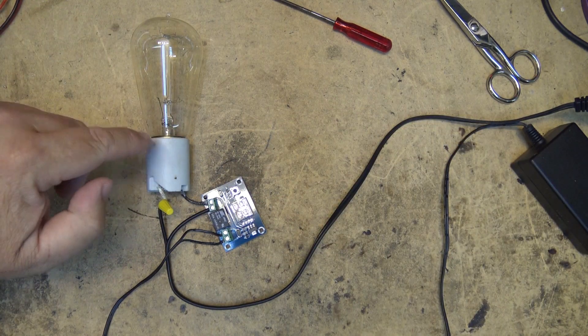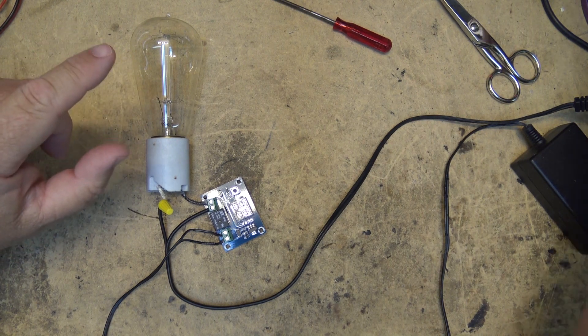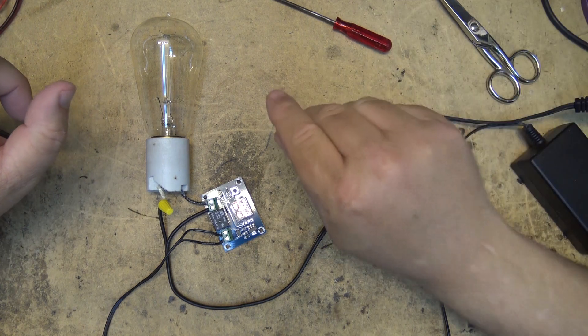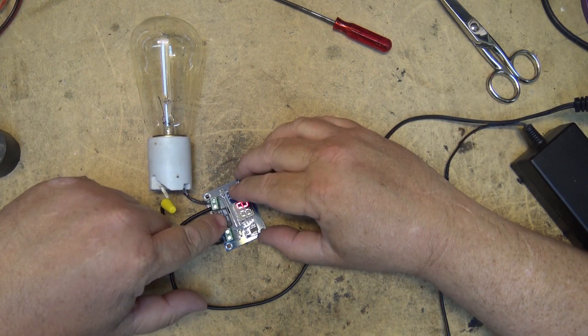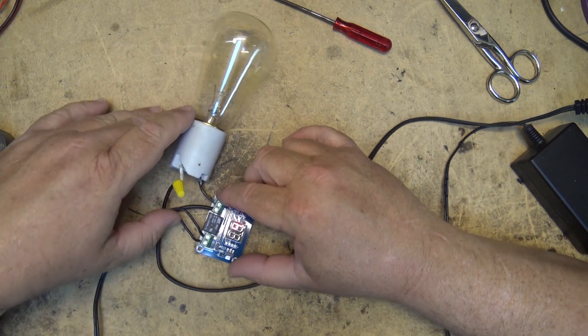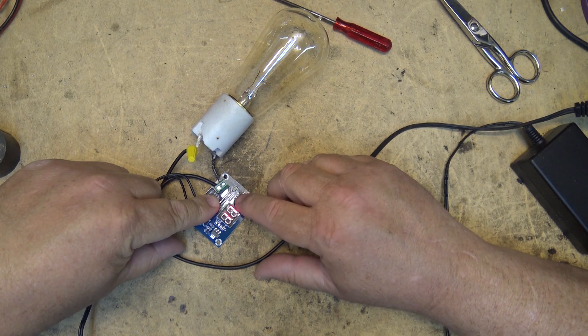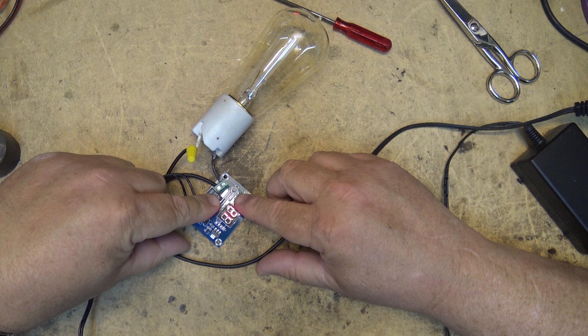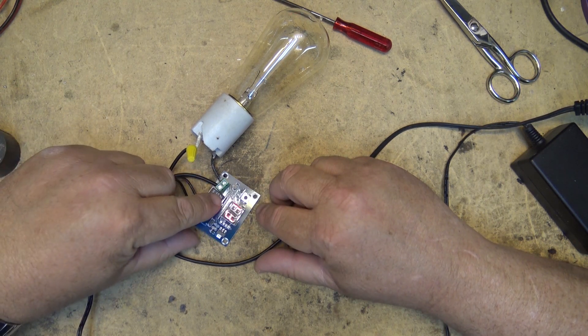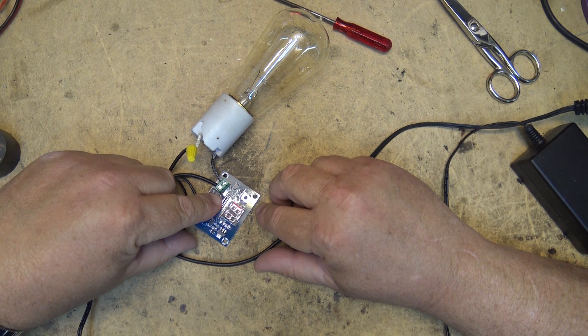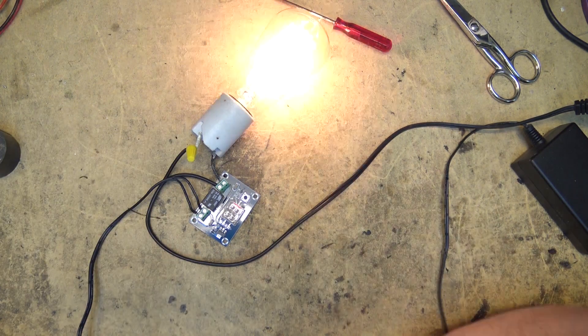When I power this unit up it should turn the relay on immediately. Might help if I turn on the right switch. Now I just have to figure out how to set this thing. If I press and hold the button it should tell me F2 is for hours and F1 is for minutes. So it's set for one minute now. Now does this turn on after a minute? There we go, now it's on.